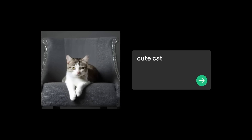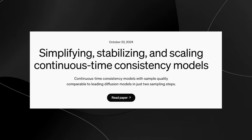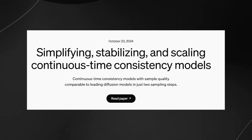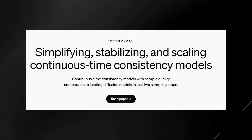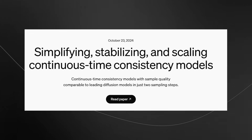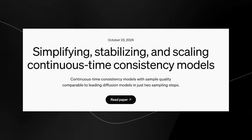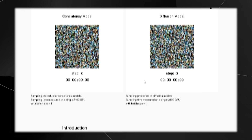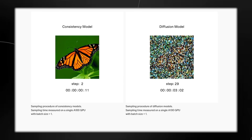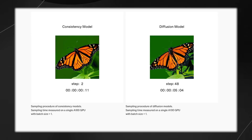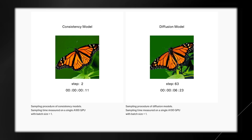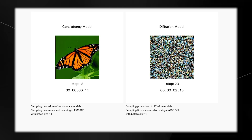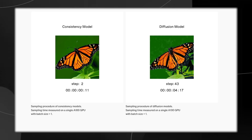They've got a new solution: SCM. SCM changes the game by taking giant leaps instead of many small steps, requiring just two steps to create an image. This makes the model approximately 50 times faster than traditional methods. For instance, it can generate an image in around 0.11 seconds on specialized hardware — generating images in 0.1 seconds, 50 times faster, is absolutely incredible.